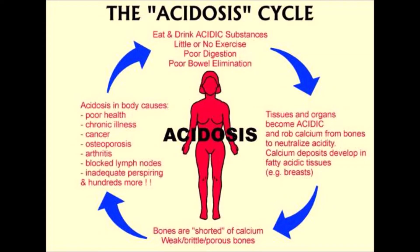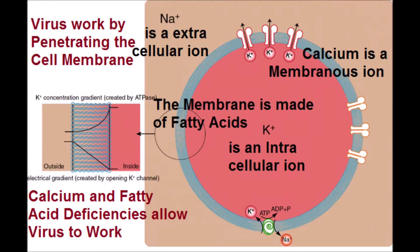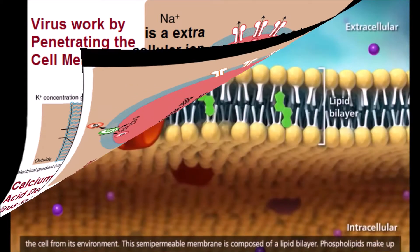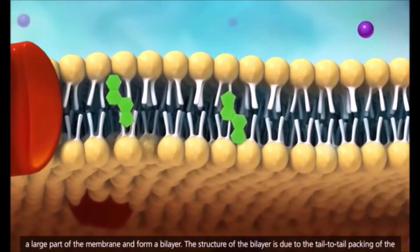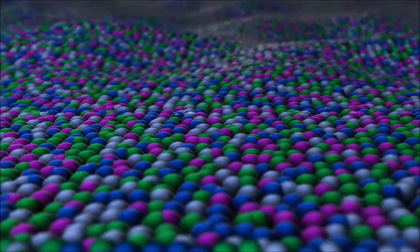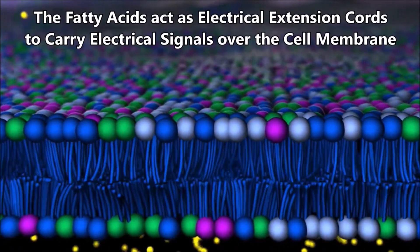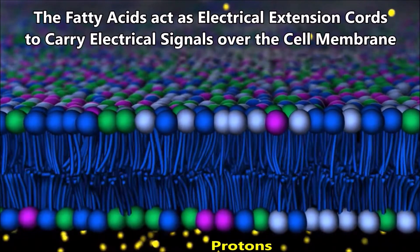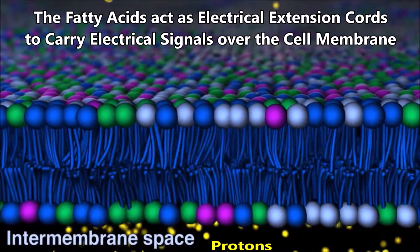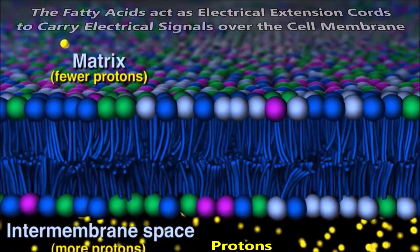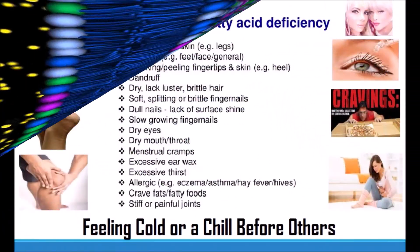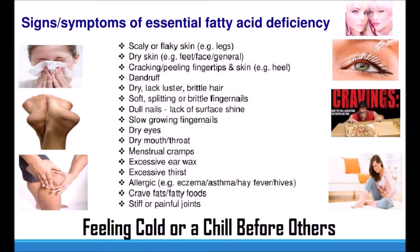Another key factor in the acidosis cycle — making our bodies turn acid — is problems of the membrane. Deficiencies of calcium and fatty acids not only allow viruses to work and penetrate, but they create other problems: acidosis. These different phospholipids, these fatty acids that make up all the membranes of the cells of the body — their heads pierce the water and the tails like the water, so they line up to make these membranes. These membranes are very key in keeping protons on one side and creating all the factors of life through the cell membrane. When we get fatty acid deficiencies, we get problems in the membrane. Signs and symptoms of essential fatty acid deficiency include feeling cold or chilled before others in a room.